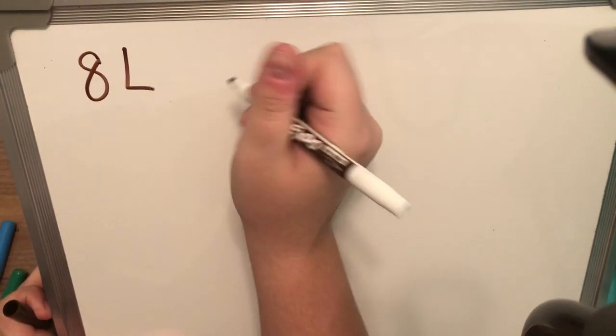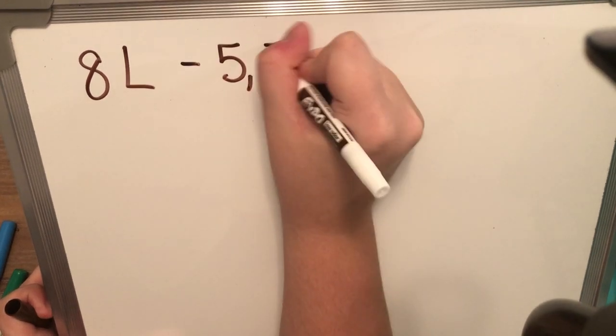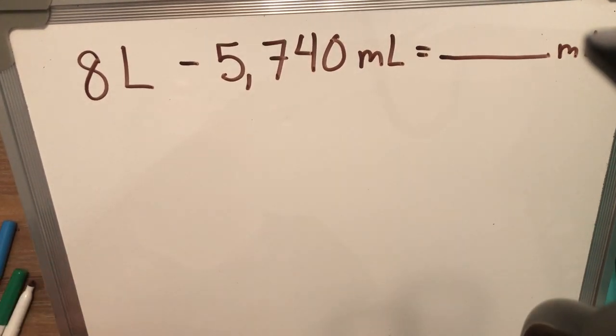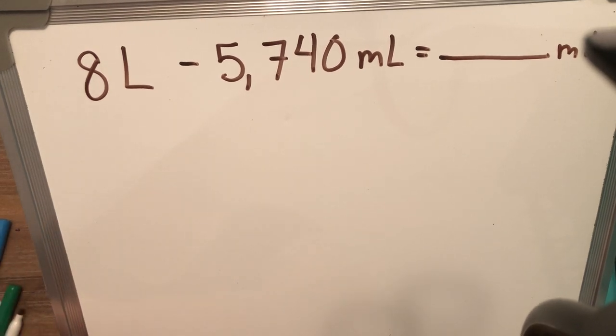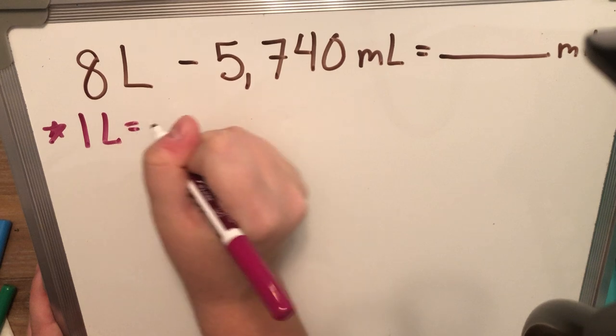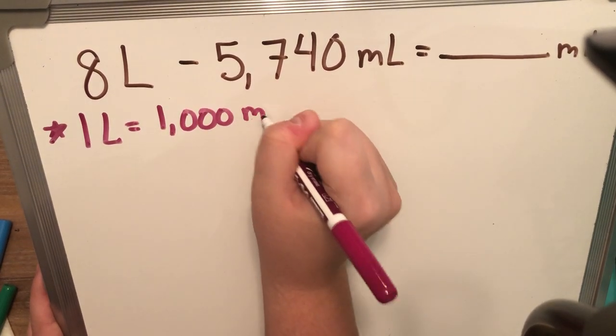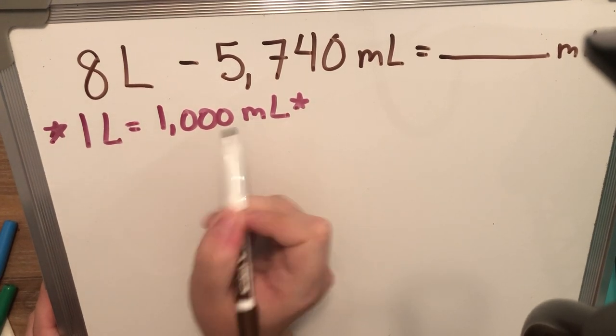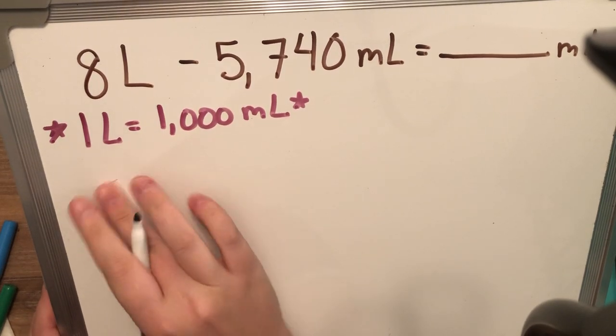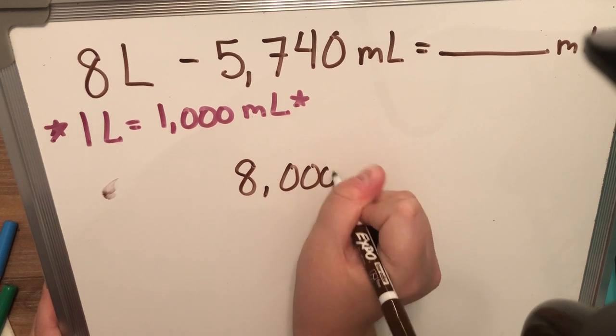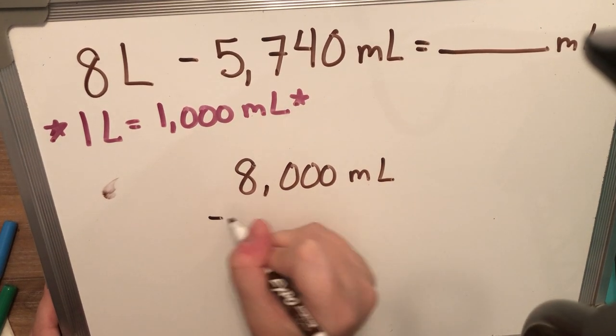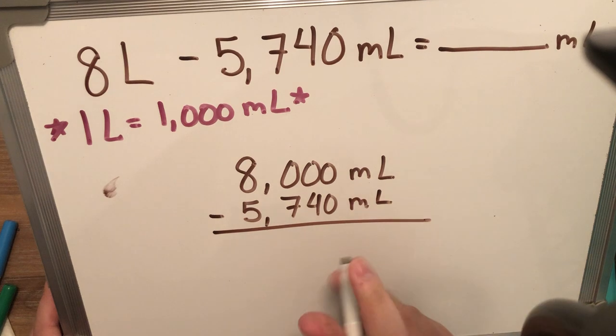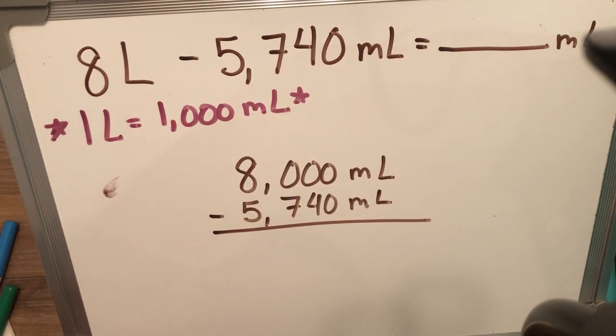I have 8 liters. And I'm subtracting 5,740 milliliters. Now, we're going to figure out how many milliliters are left. Now, golden ticket rule. I'm going to go ahead and write it right underneath there. 1 liter is worth 1,000 milliliters. I'm going to start my conversion. Well, 1 liter is worth 1,000 milliliters. So, 8 liters is going to be worth 8,000 mL. And then I can go ahead and subtract 5,740. Making sure I write down my units. And now I can go ahead and solve.